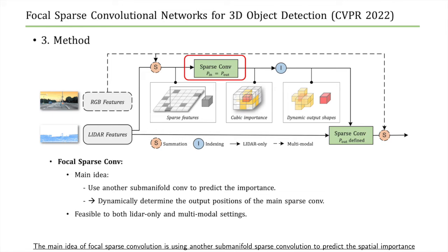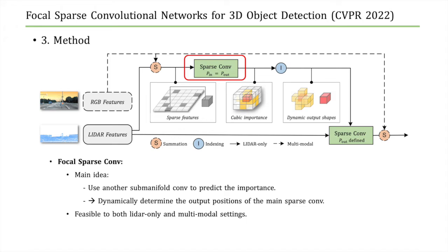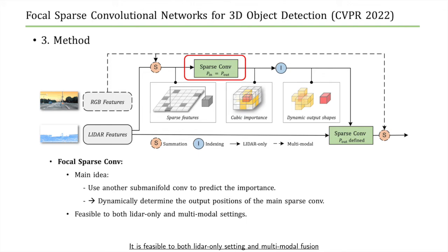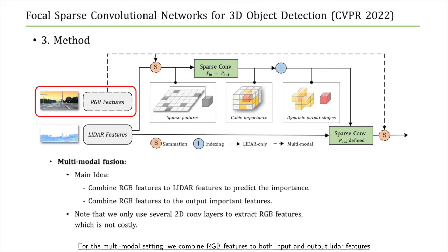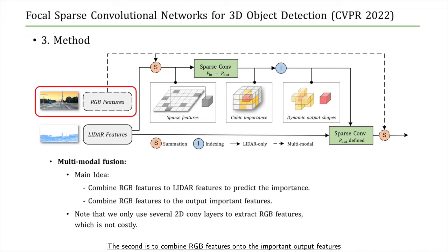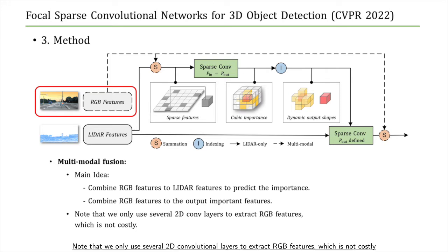The main idea of focal sparse convolution is using another submanifold sparse convolution to predict spatial importance. It dynamically determines the output positions of the main sparse convolution, and is feasible for both LiDAR-only and multimodal fusion settings. For the multimodal setting, we combine RGB features to both input and output LiDAR features. The first combination at the input is for importance prediction, and the second combines RGB features onto the important output features. We use only the first convolutional stage of ResNet-50 for feature extraction, which is not costly.